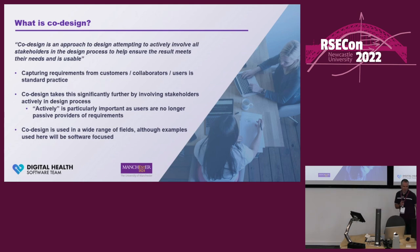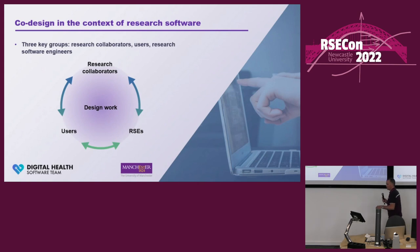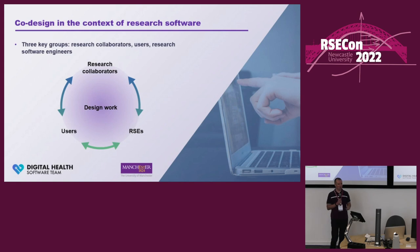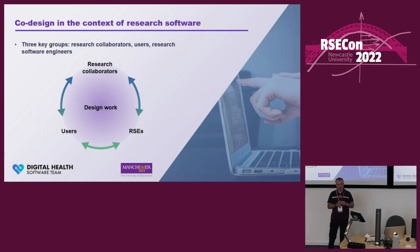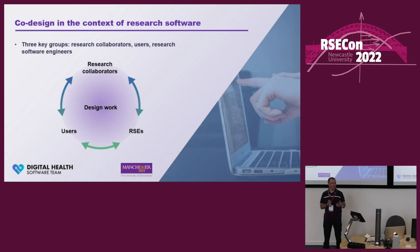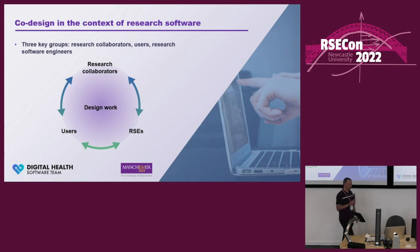I'm going to be giving examples from the software side of things, but as I said, there are a wide range of uses of co-design. The kind of setup that we have in our team — an ideal setup — is that we've got a circle and all of the contributors sit on that circle: the research software engineers, the users, and the research collaborators. The idea is that these three groups all work together, contributing actively and sharing ideas throughout the whole process, with no hierarchy — everyone should be actively involved and contributing equally.